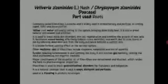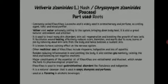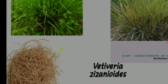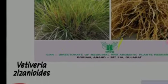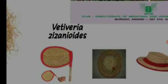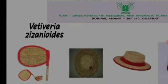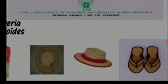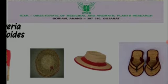Vetiveria zizanioides, also called Chrysopogon zizanioides, belongs to the family Poaceae and the part used is roots. These are a few products made out of the roots — a hand fan, a prayer mat, a meditation mat, a hat, and a pair of chappals made out of vetiveria roots.